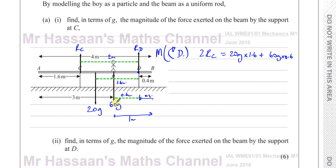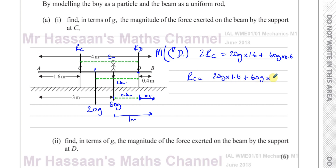Taking moments about D: the distance of 60g from D is 0.6 meters — because from D to the end is 0.4 meters, from the end to P is one meter, so together that's 0.6. The distance of 20g from D is 1.6 meters — the midpoint is two meters from the end, minus 0.4 gives 1.6. So Rc times 2 equals 20g times 1.6 plus 60g times 0.6.